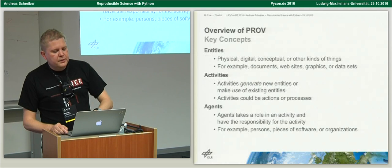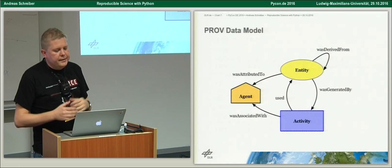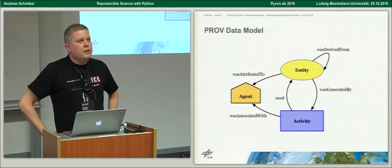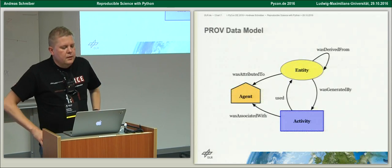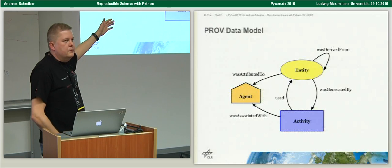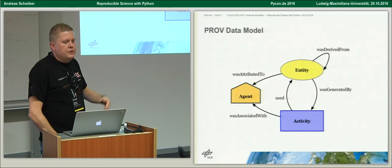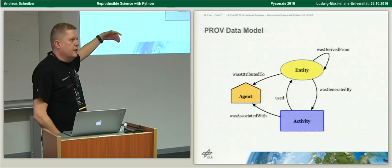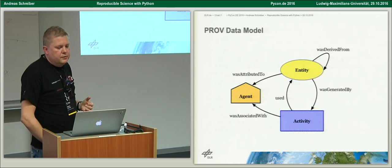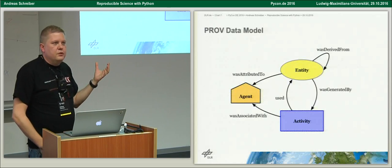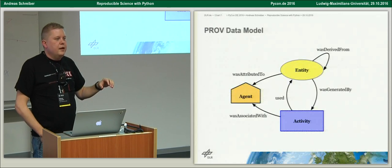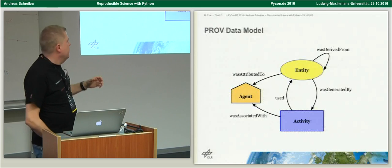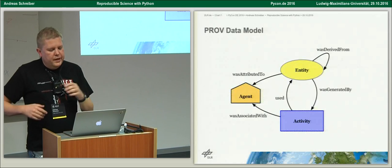These key concepts — entity, activity, and agent — are mapped together in the data model. An important concept is the relations between these elements. For example, 'used': an activity used an entity, meaning an algorithm used a file. 'Was generated by': a result set was generated by some algorithm. 'Was derived from': one entity was derived from another, like a result file from a simulation was derived from the input file with the input parameters. And we have an agent — the human controlling the workflow or experiment.